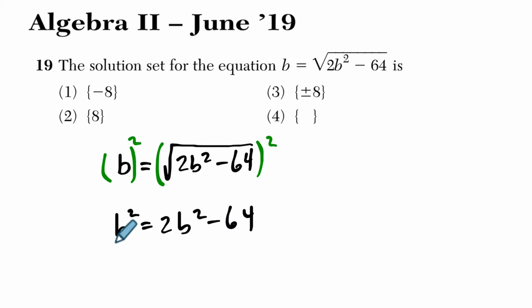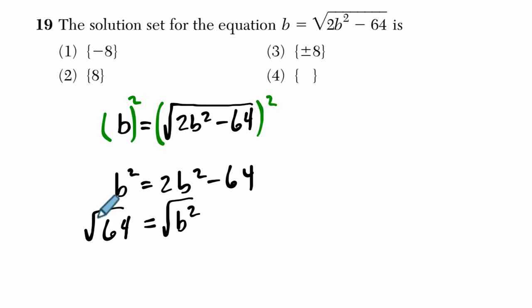Then what I'm going to do is subtract b squared over here and add 64 on the other side. If I solve for b by square rooting both sides, these cancel and we get b equals plus or minus 8. So I just went ahead and circled plus or minus 8.